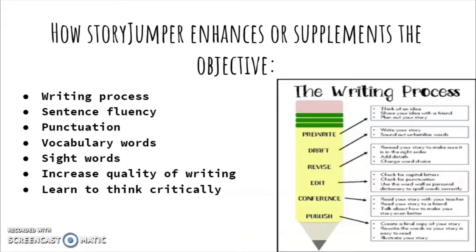How StoryJumper enhances or supplements the objective: it helps with the writing process, sentence fluency, punctuation, vocabulary words, and sight words. It increases quality of writing and helps students learn to think critically.